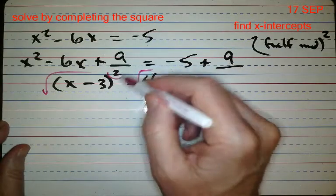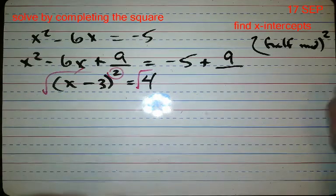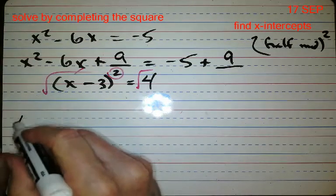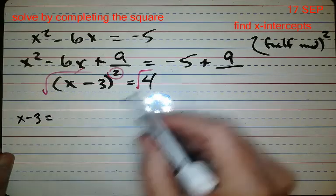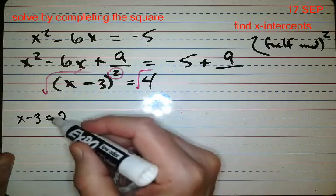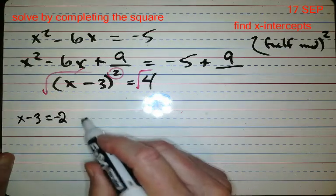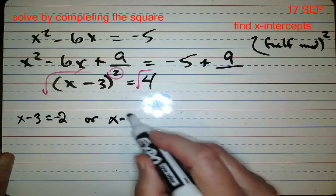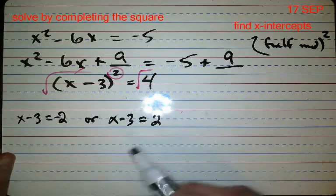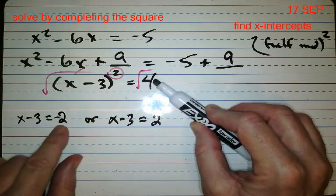And see, that cancels that out. So I will have over here, I will have x minus three equals, you know, the square root of four, I knew you did. And there's always one positive and one negative. X minus three equals two, so the square root of four is positive two, the square root of four is negative two.